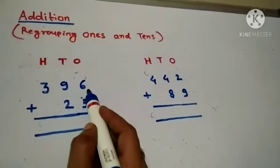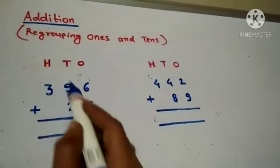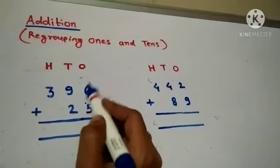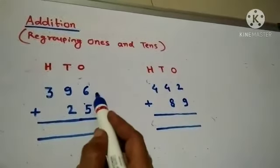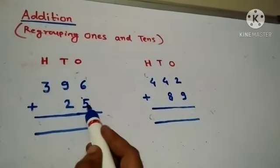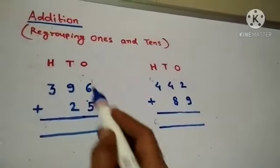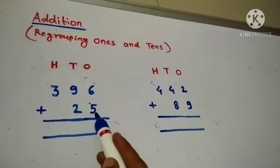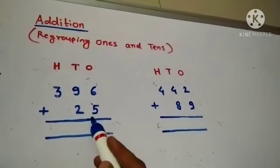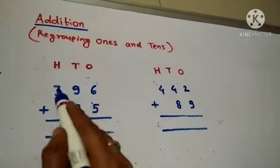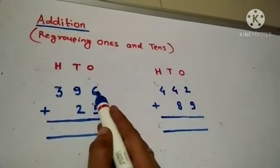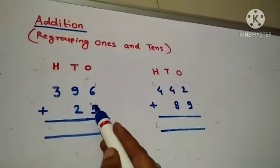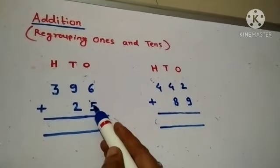396 is 3 100's, 9 10's, and 6 1's — a 3-digit number. And 25 is 2 10's and 5 1's — a 2-digit number. When you add a 2-digit number to a 3-digit number,